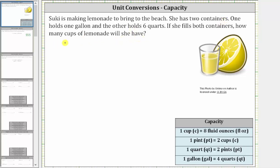So if she uses both containers, she has one gallon plus six quarts of lemonade. Well, let's first get the total amount in the same units. And since one gallon is equal to four quarts, we can substitute or replace one gallon with four quarts, and therefore Suki has four quarts plus six quarts, which is equal to 10 quarts of lemonade.